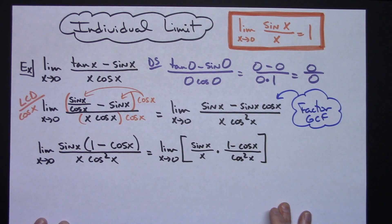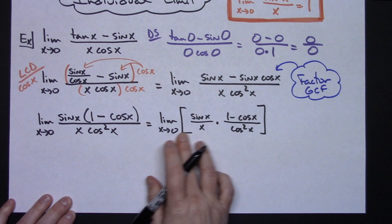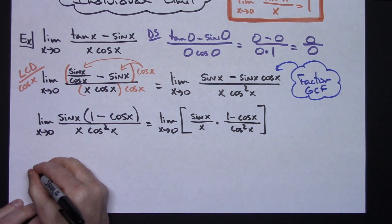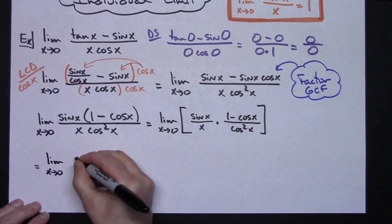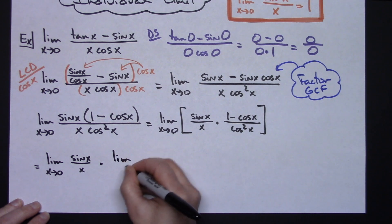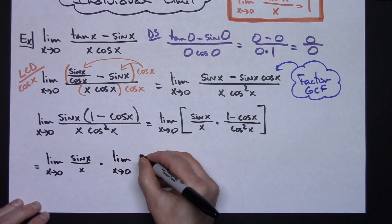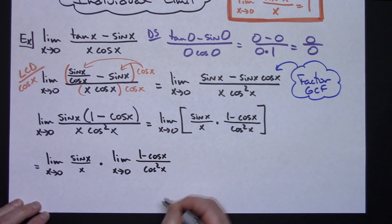At this point let's write that extra step. I can take the limit of each one individually according to my properties for limits: the limit as x approaches 0 of sin(x) over x times the limit as x approaches 0 of 1 minus cos(x) all over cosine squared x.